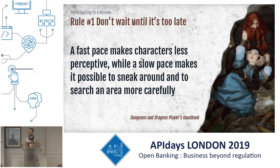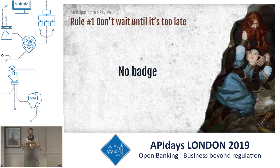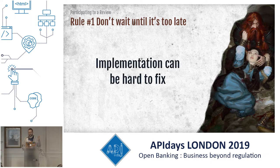Rule number one: do not wait for the last minute before going into production to contact API design reviewers. They are not here to give you some kind of patch to go into production. If you think that, do not bother to contact them — but be ready to face the consequences. If it's quite simple to fix an API design before everything has been implemented, it may be far more complicated to change anything once everything has been developed, or worse, put into production.